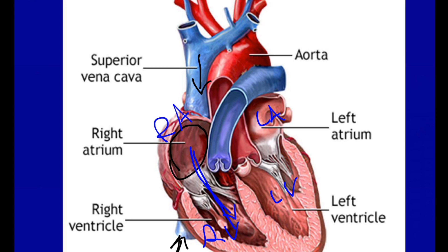After blood is in the right ventricle, it is pumped into the pulmonary trunk. The pulmonary trunk and pulmonary arteries are the only arteries that do not carry oxygen, because they are taking blood from the right side of the heart to the lungs — that's where the word pulmonary comes from. There is a valve on the pulmonary trunk called the pulmonic valve, sometimes called the semilunar pulmonic valve, which closes shut after blood is ejected into the pulmonary trunk on its way to the lungs.